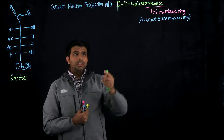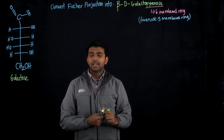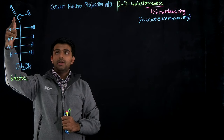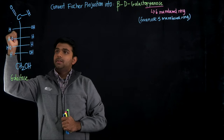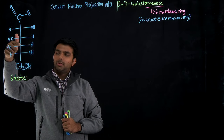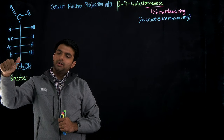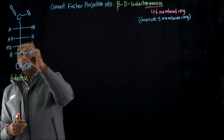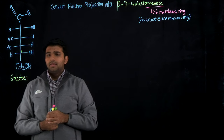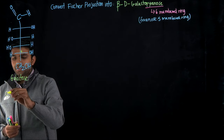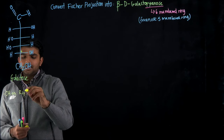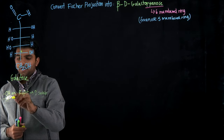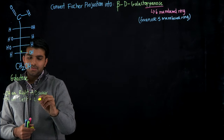Another thing is to find out whether the Fischer projection is in the D or L form. The way to figure that out is to find the most oxidized carbon — the carbon double-bonded to oxygen — and then find the furthest stereocenter away from it. The fourth stereocenter is the one to look at, since the carbon below it has two hydrogens and is not a chiral center. If the OH is on the right, it's a D sugar; if the OH is on the left, it's an L sugar.